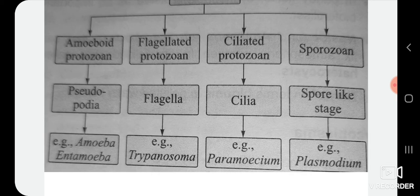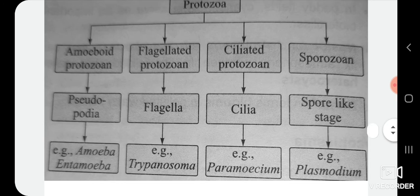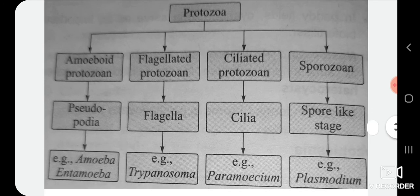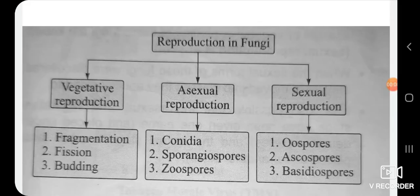So there are four types of protozoans — you can easily understand the group protozoa from this chart. This is a very important point of the kingdom fungi as well.